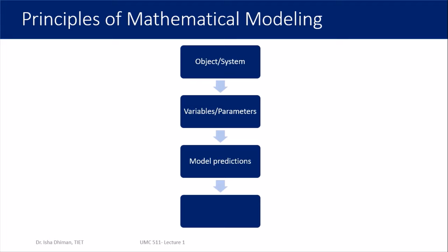Whatever way you solve it, you have a solution at hand. Once you get the solution, we look at predictions — what information the model is giving us. We interpret our mathematical results in the language of the real world and give some outcome: for example, our model is telling us the virus is going to spread at a certain rate. We interpret our results, and then we cannot just stop — we have to see whether the result is valid or not.